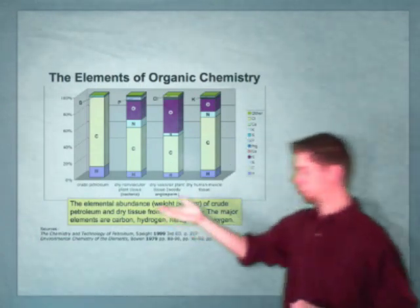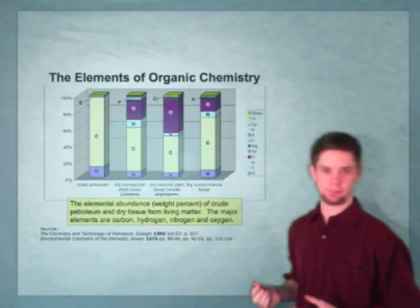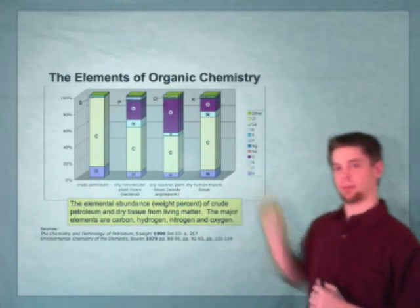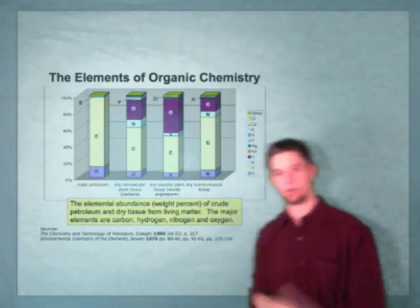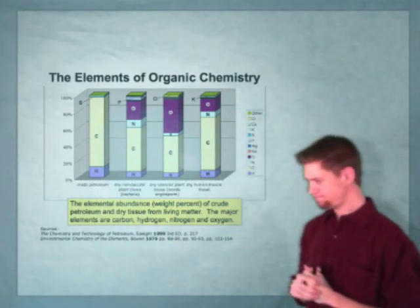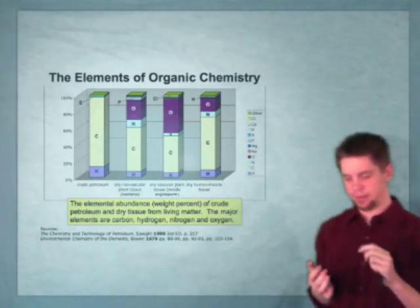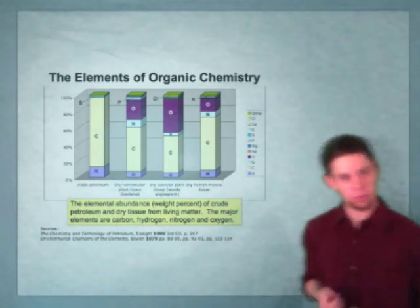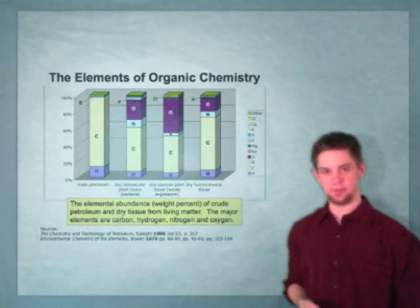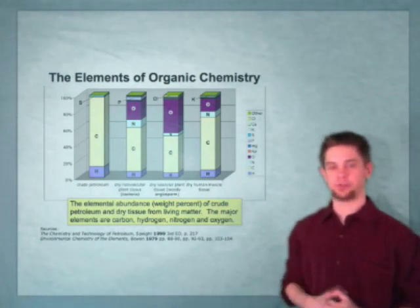Likewise, the three bars over here show you some various constitutions of crude plant matter. Looking at plant matter and also at animal matter, we can see that carbon makes up a huge percentage of these. It's the four key elements of organic chemistry that are also key to life: hydrogen, carbon, oxygen, and nitrogen. These four elements we'll see again and again, and they are really the cornerstone of organic chemistry.